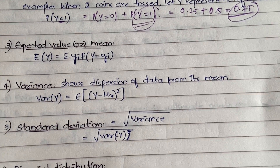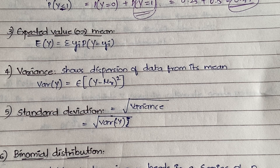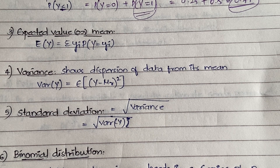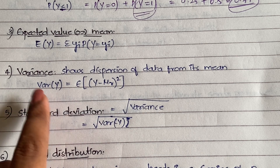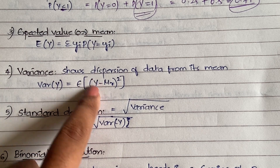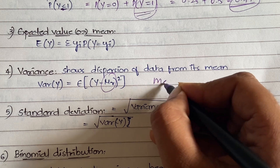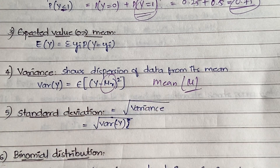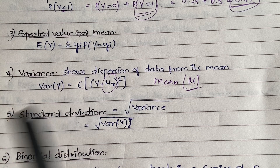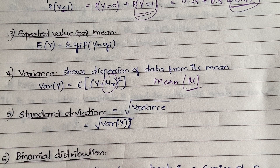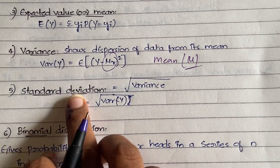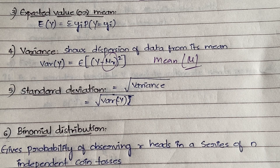The fourth definition is variance. Variance shows the dispersion of data from its mean. Var(y) = E[(y − μ)²], where μ is the mean. Mean can also be represented as E(y) or mu. The fifth definition is standard deviation, which is simply the square root of the variance. There is no separate formula; you calculate variance first and then take the square root.